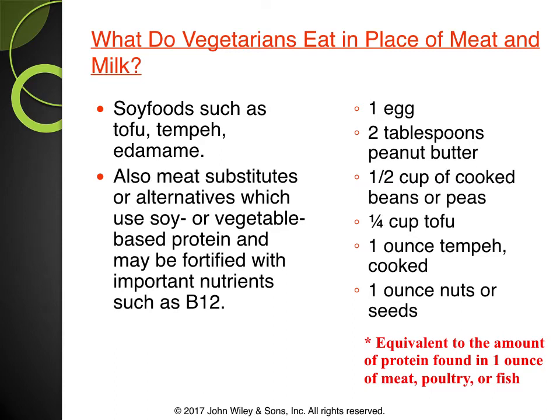What do vegetarians eat in place of meat and milk? Here are some examples of foods — this list is equivalent to the amount of protein found in one ounce of meat, poultry, or fish. Additionally, if somebody is eating meat substitutes or meat alternatives, which are typically soy or vegetable based, they sometimes are fortified with nutrients such as B12 — so that's how some vegetarians get those nutrients as well.